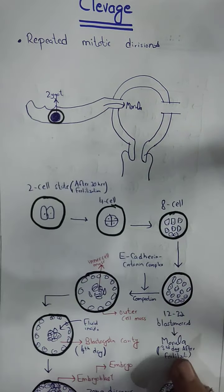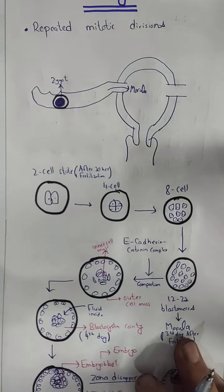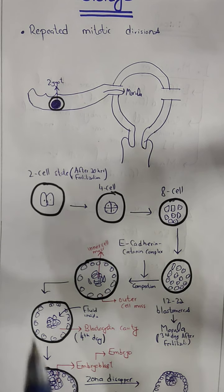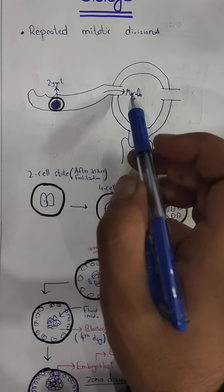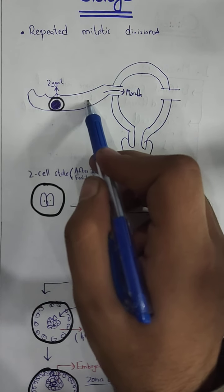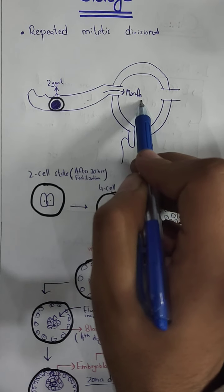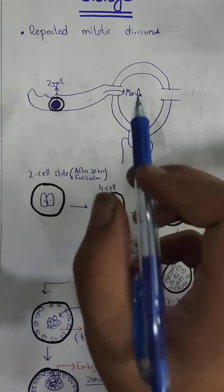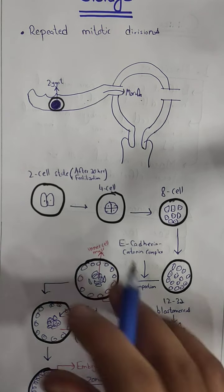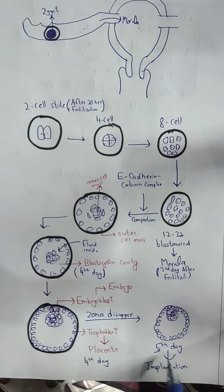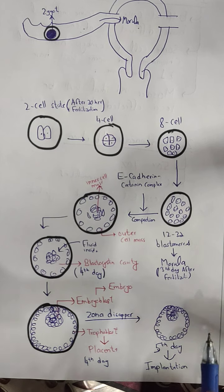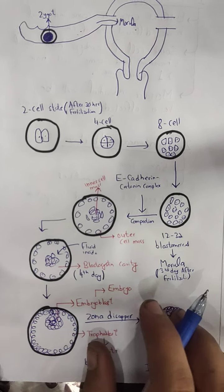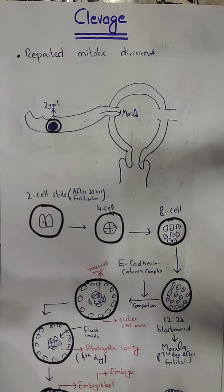So now we have seen cleavage. We discussed the uterine body and the fallopian tubes, and we discussed the timeline. The main points are: on the third day the Morula enters the uterine body, and on approximately the fifth day the zona pellucida disappears. These are the two main points we must remember. Thank you.